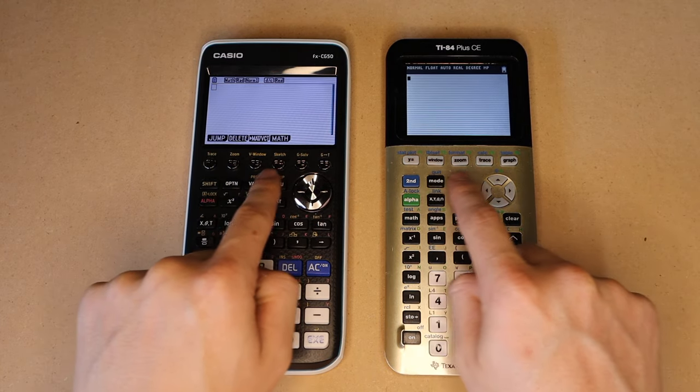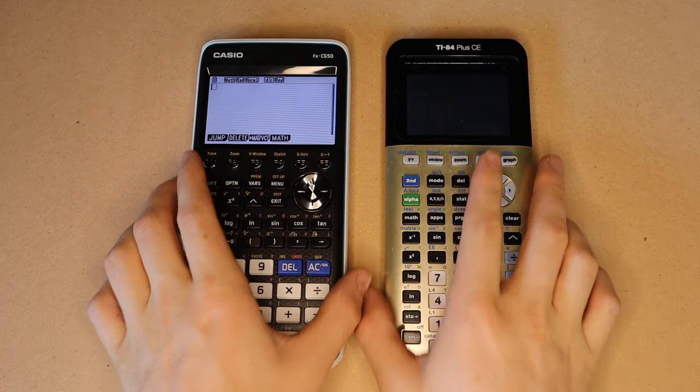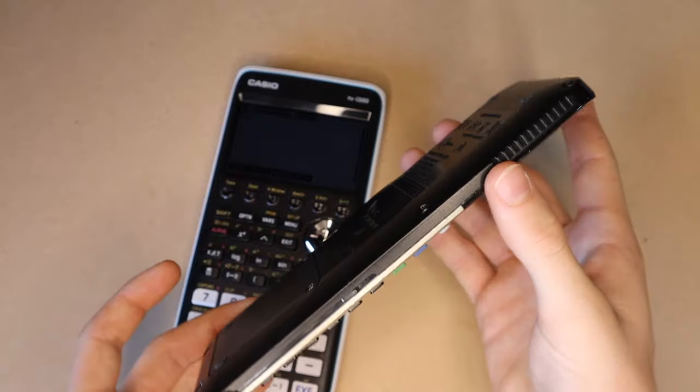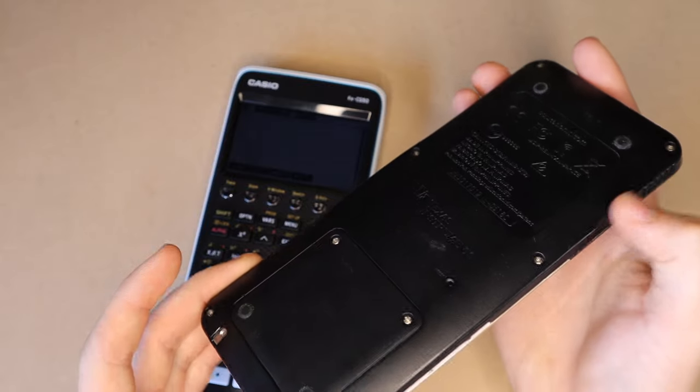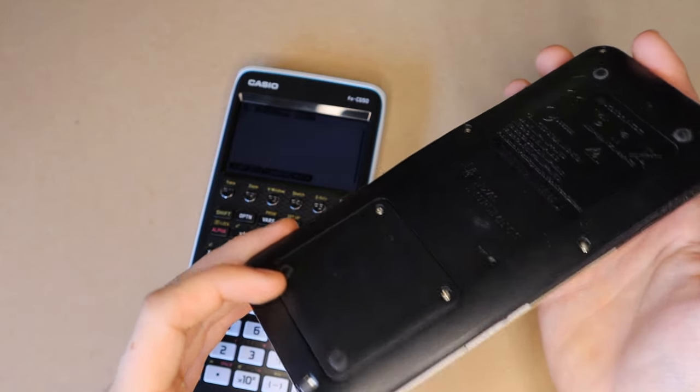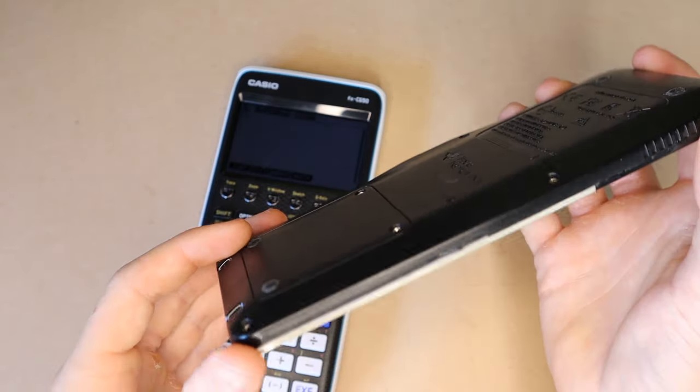And then the contextual keys up top. And then one of the most obvious hardware differences is the thickness. The TI-84 Plus CE, you can see, is quite a bit slimmer, and a lot of that is because it has a built-in rechargeable lithium-ion battery on the back.